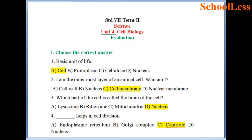Question 1: Choose the correct answer. The basic unit of life — options are A cell, B protoplasm, C cellulose and D nucleus. The right answer is cell. We have seen that cell is the basic unit of life in any organism.